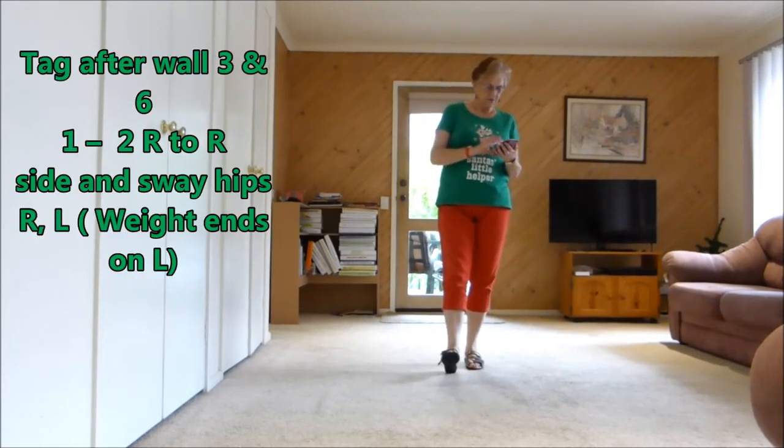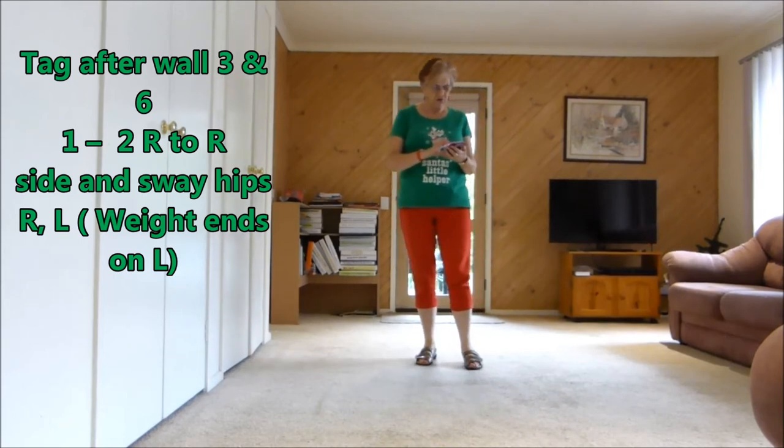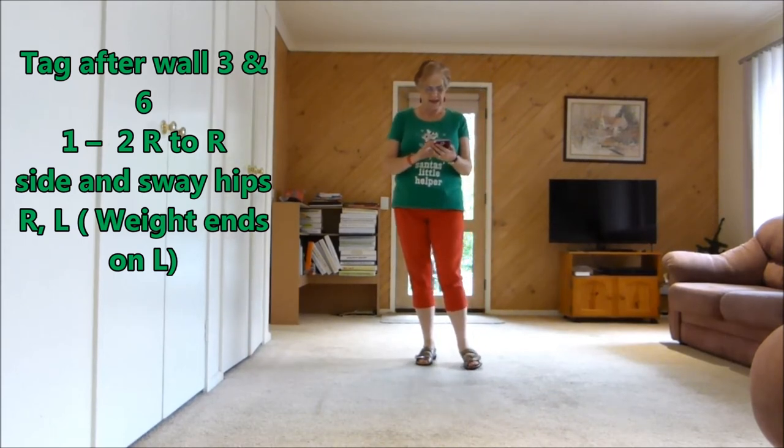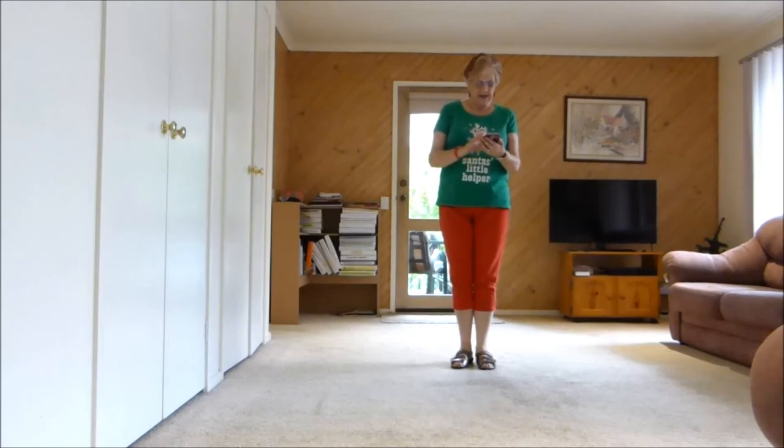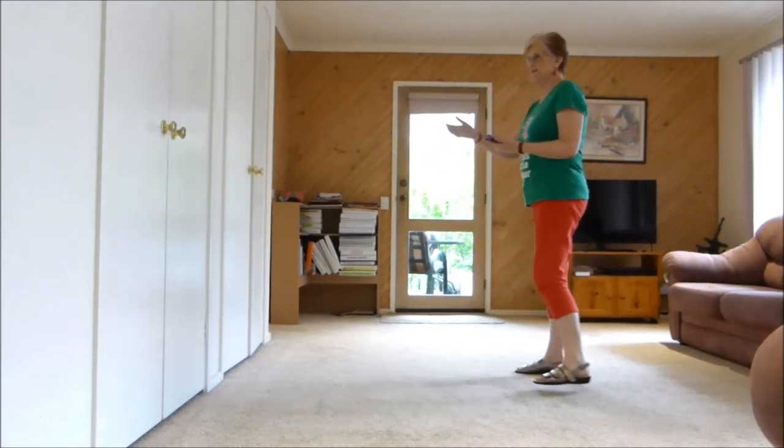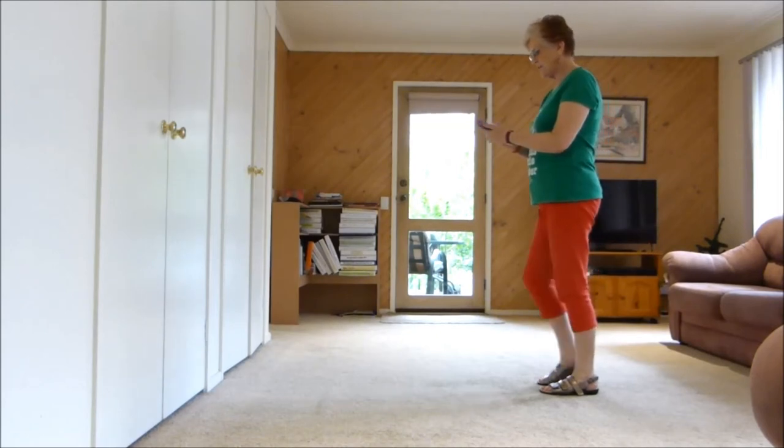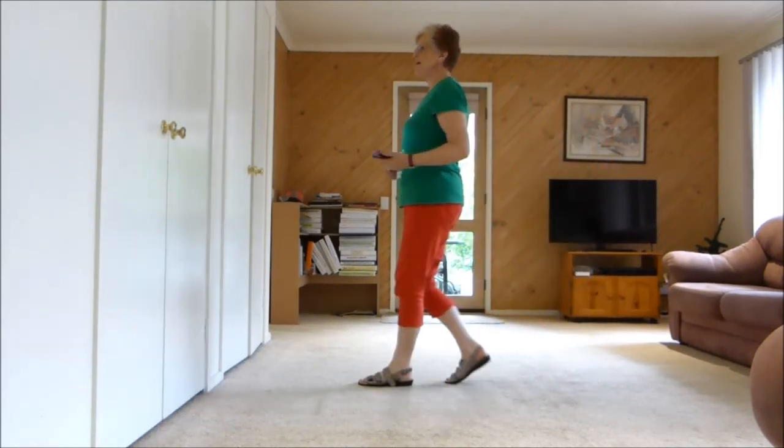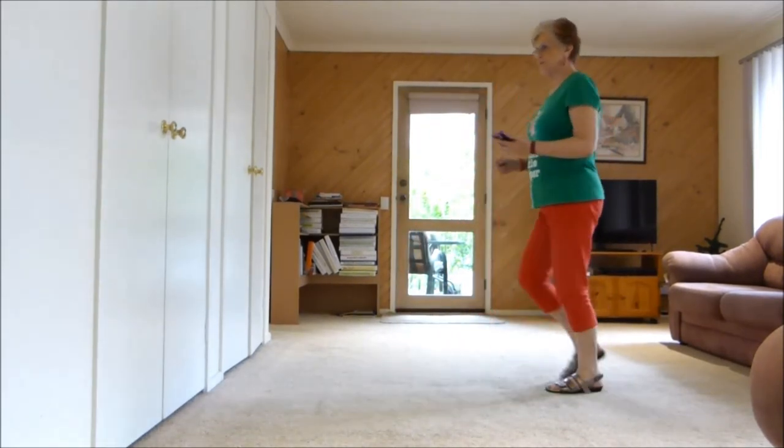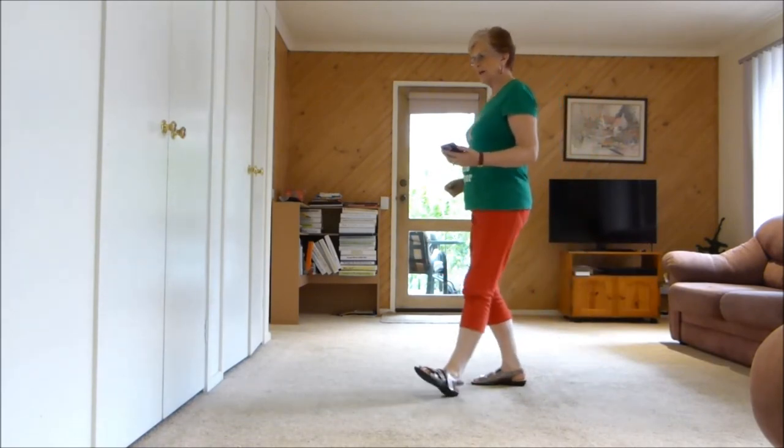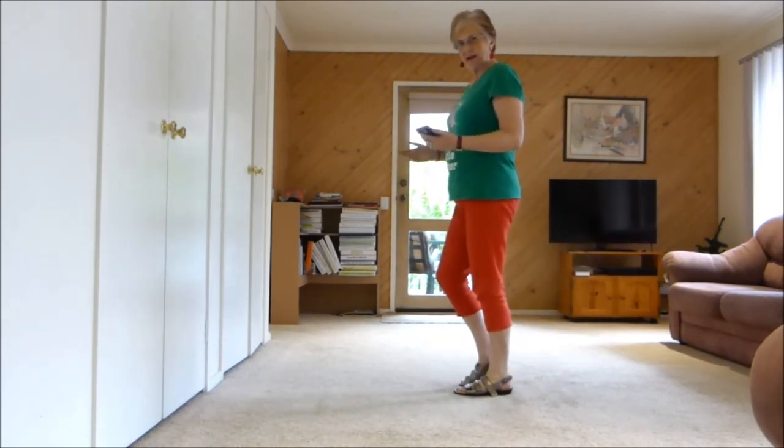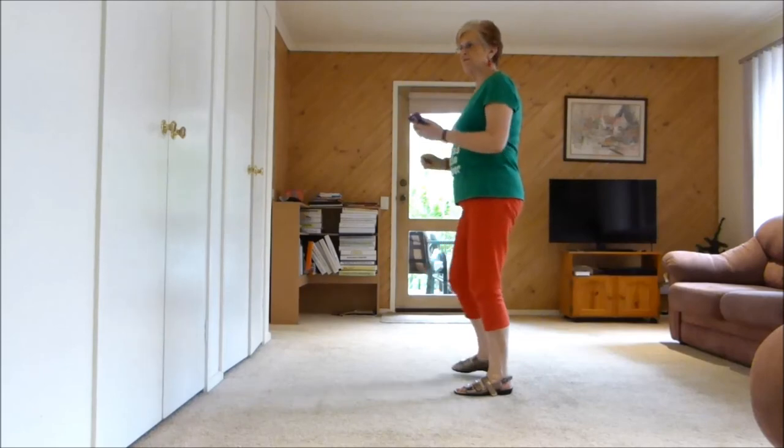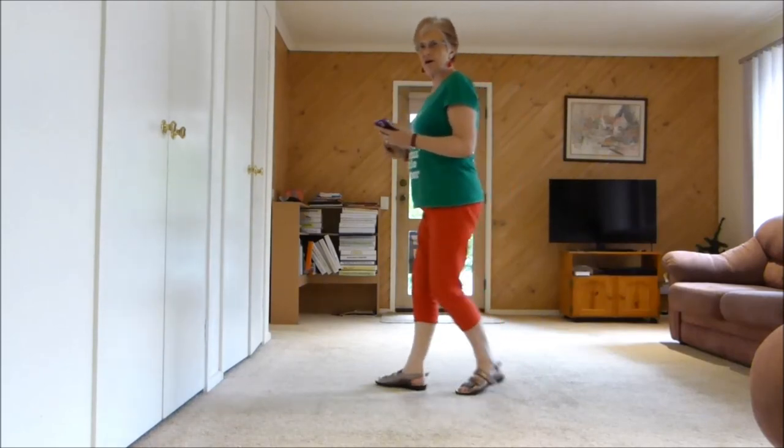Now bring your attention to the third wall where we will have a tag, and our tag is going to be facing this wall here. So we will have done our mambo, mambo step, coaster step, heel hook, heel hook, stomp. And we just touch lightly there as we hip hip, then right lock right, left lock left.